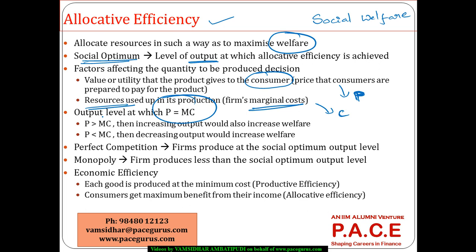As long as the price is greater than the marginal cost, the firm can produce one more unit and make additional profit, and at the same time people are ready to pay for it — which means it is increasing welfare. If the price is lesser than the marginal cost, people are not ready to spend any more, so there is no point in selling that additional output. We talk about the output level where price and marginal cost are equal — that output is what brings out allocative efficiency.